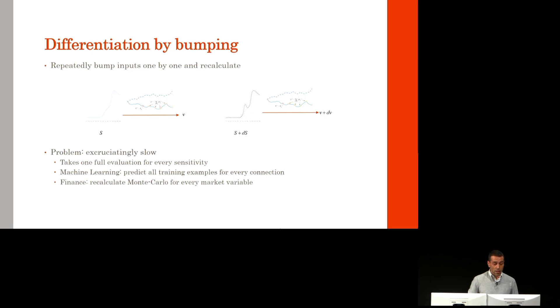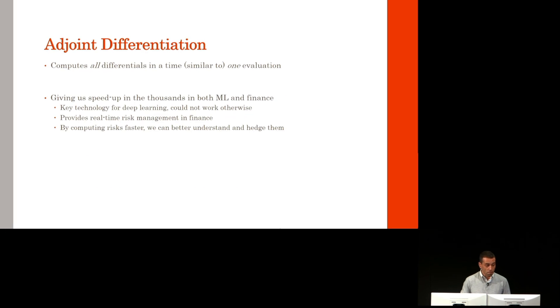In machine learning, we must predict all the training examples for every connection weight, and in finance, recalculate a whole Monte Carlo for every market variable. In contrast, AD computes all differentials in a time similar to one evaluation, giving us speed-ups in the thousands in both machine learning and finance.